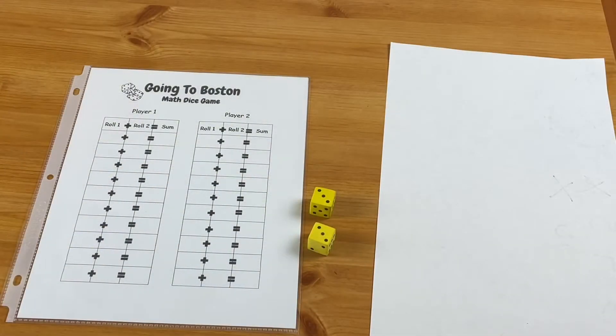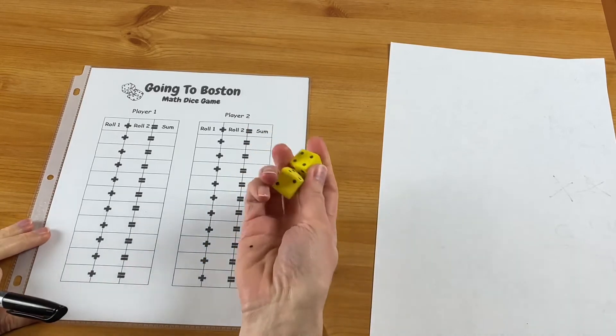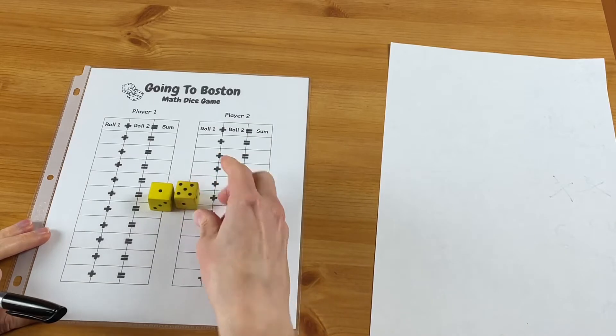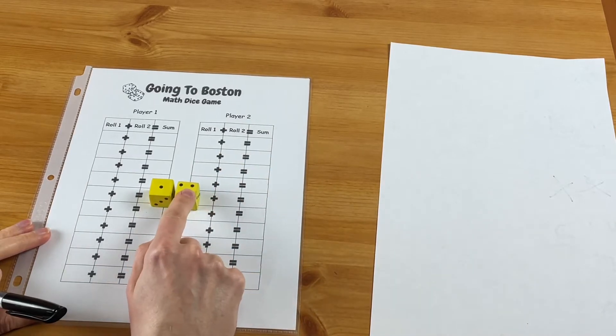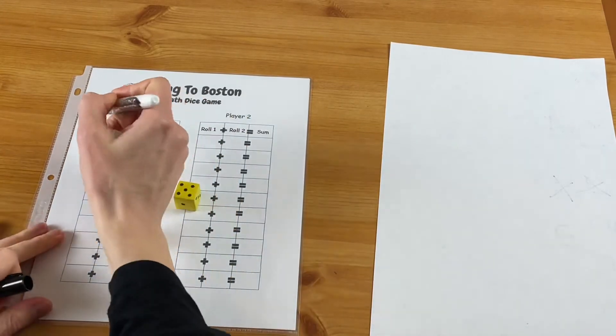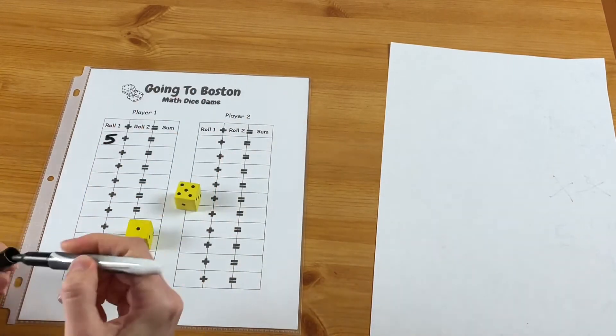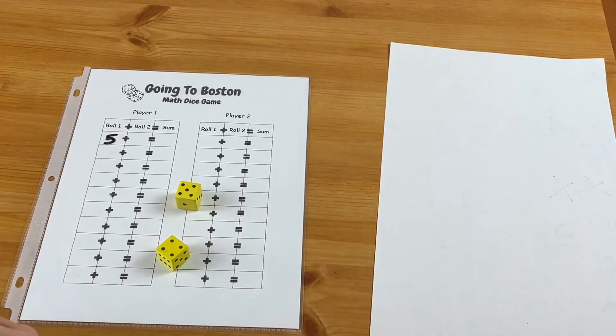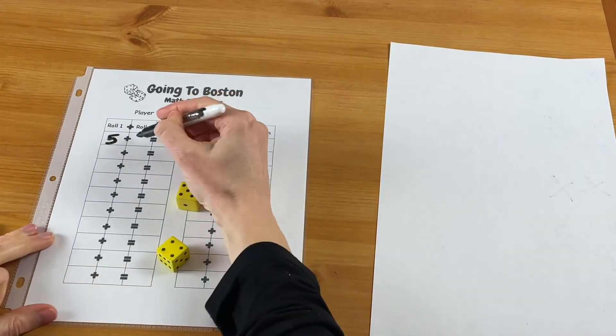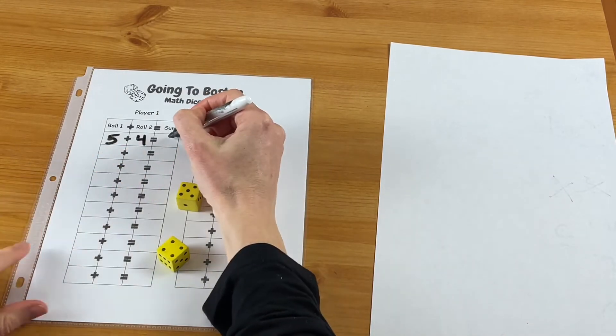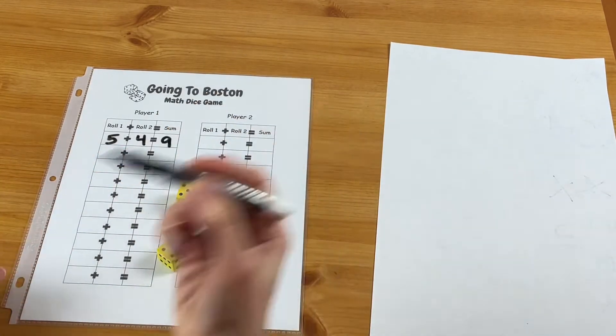This game is called Going to Boston. For this game you will roll - you can start with two dice - you will keep the higher number. In this case it's five. That'll be your roll one. You'll take the lower number, roll that again, and that will be roll two. Then you'll make your math sentence: five plus four, and you'll find the sum.